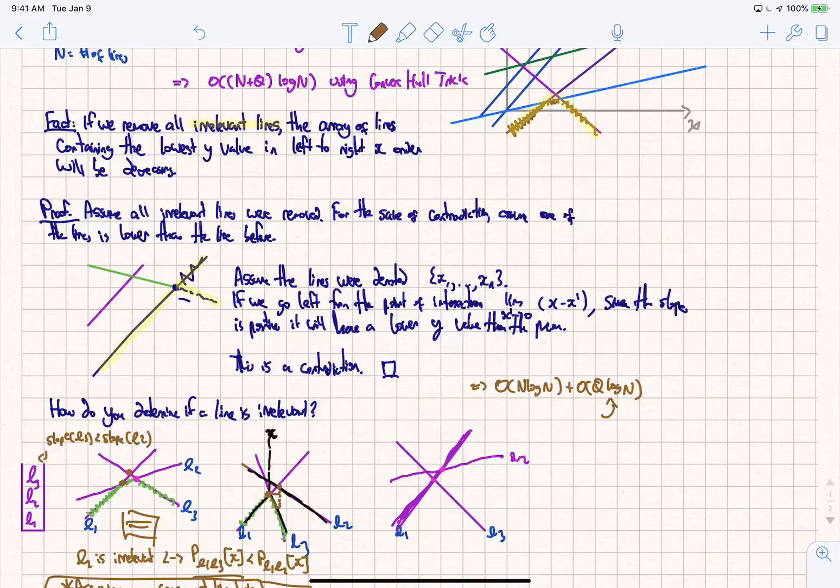But we perform this q times and each time takes log n time. So log n time for q queries. So if we simplify this, we get O(n log n) plus q log n, which is much faster than nq.